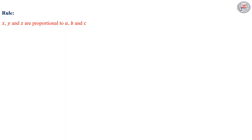From these two examples, we can deduce the rule: if x, y, and z are proportional to a, b, and c, then x/a = y/b = z/c = k, and vice versa.